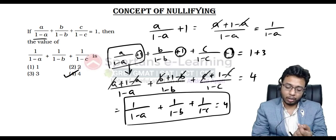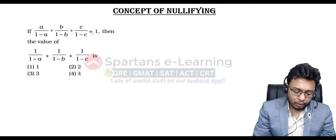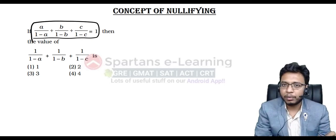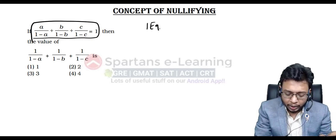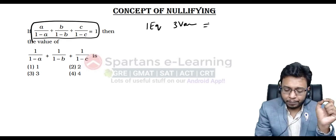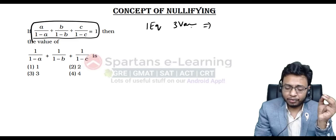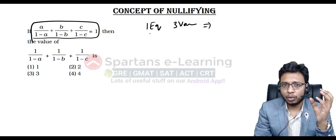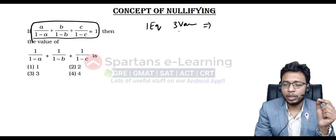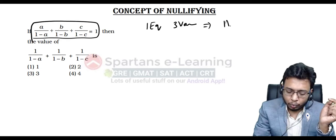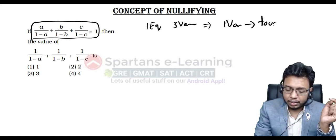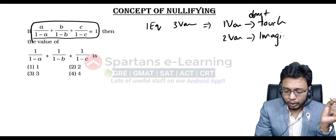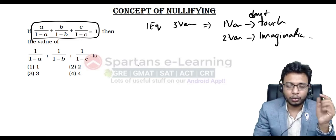Now we will solve using the concept of nullifying. Here you have only one equation and three variables. Whenever you have three variables, you need a minimum of three equations to solve them, but here only one equation is given. The meaning of this is: out of three variables, only one variable will have a definite answer — do not touch it. The other two variables are placeholders for imagination; you can imagine any value for them.